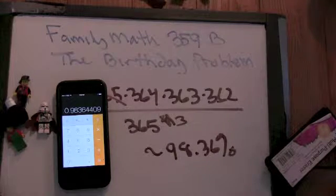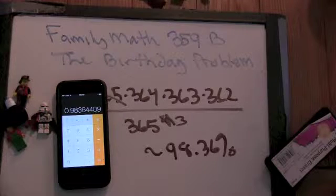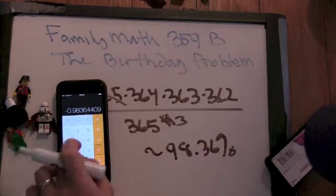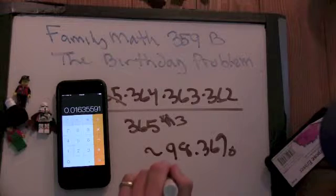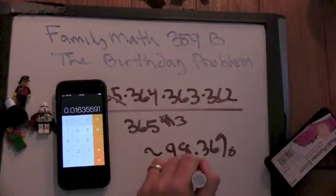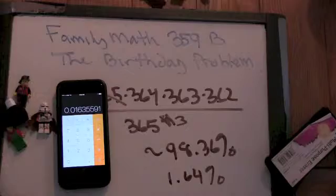So what's the probability that at least two people are going to have the same birthday? About 1.64 percent. Make it negative and then add 1 to it — and I get about 1.6... yeah, rounds to 1.64. So with 4 people, there's about a 1.64 percent chance. So it's increasing slowly.